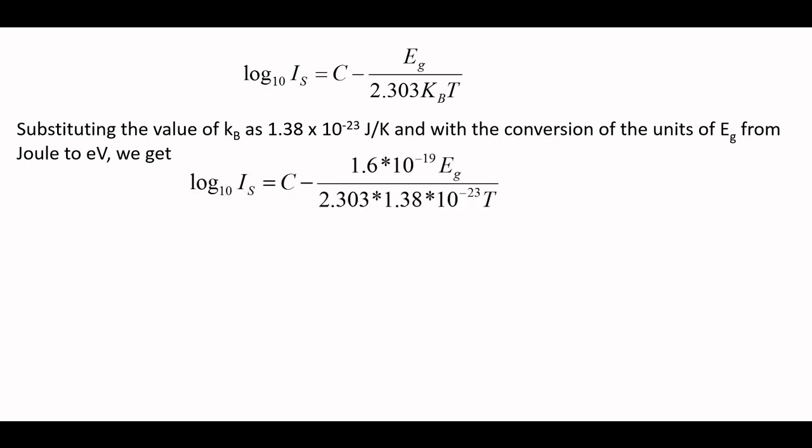Substituting the value of Kb as 1.38 times 10 to the minus 23 J/K and with the conversion of the units of Eg from Joule to eV, we get log of Is equals C minus 10 to the power minus 19 Eg upon 2.303 times 1.38 times 10 to the power minus 23 T. If we further simplify this equation, we get log of Is equals C minus 5.036 times 10 to the power 3 times Eg upon T.